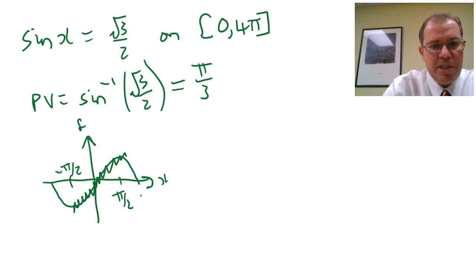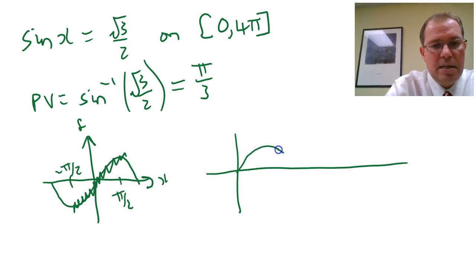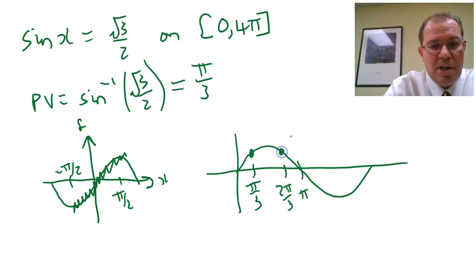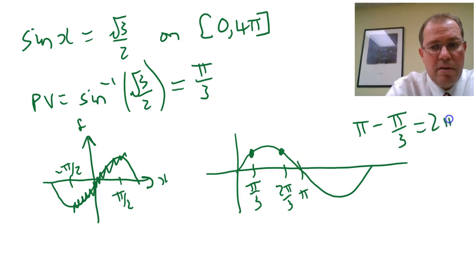Now once we've got the principal value we can find the secondary value. The secondary value for sine is always π minus the principal value, because here's the principal value π over 3 and the secondary value we can see is 2π over 3, because it's π minus π over 3 giving us 2π over 3.